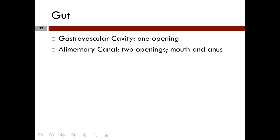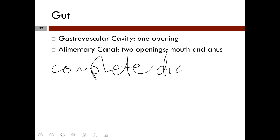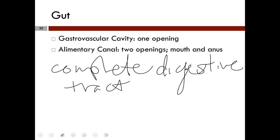Now to the gut. When referring to the gut of an animal, it matters whether the gut has one or two openings. Animals with only one opening are stated to have a gastrovascular cavity. Animals with two openings — a mouth and anus — are stated to have a complete digestive tract, also referred to as an alimentary canal.